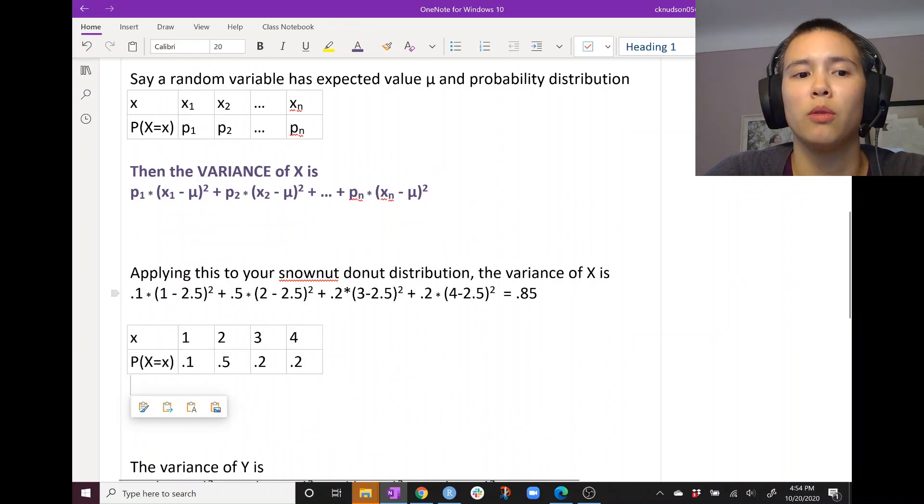Okay, so p₁, let's use our first probability, which is 0.1. We plug that in here. x₁ is 1 and we found that the expected value μ is 2.5. So for every μ that we see here, let's plug in 2.5. For each one of these probabilities, p₁, p₂ through pₙ, we'll take 0.1, 0.5, 0.2, and 0.2. And then x₁ is 1, x₂ is 2, x₃ is 3, x₄ is 4. p₁ is 0.1, p₂ is 0.5, p₃ is 0.2, and p₄ is 0.2. So we go ahead and crunch that and we get 0.85 as the variance for X.